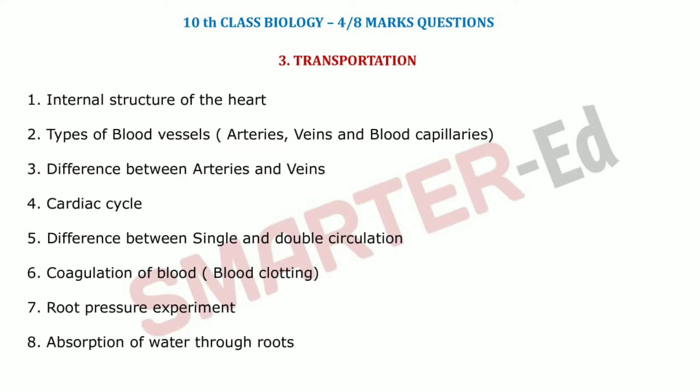Lesson number three is Transportation. The first question is the internal structure of the human heart. Second is types of blood vessels — we have three types in our body. Third is differences between arteries and veins. Fourth is the cardiac cycle — what it is and how the heart produces lub-dub sounds. Fifth is differences between single and double circulation, sometimes asked as a flowchart.